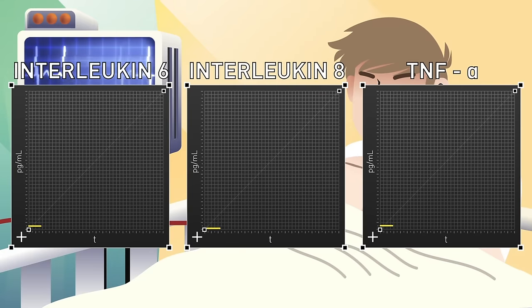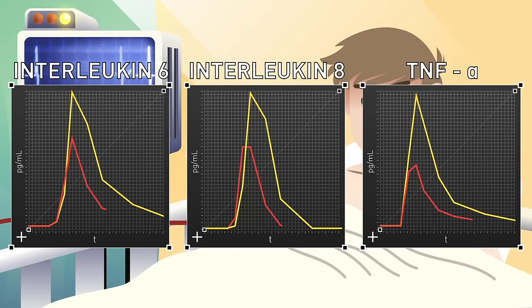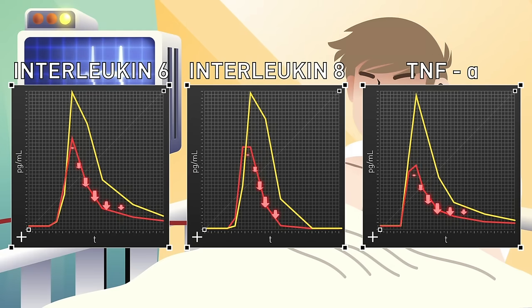Here were the cytokines kept track of in the control. Here they were in the trained group. Notice the difference in release. Far fewer in the trained group because of interleukin-10.